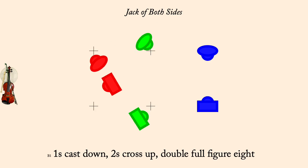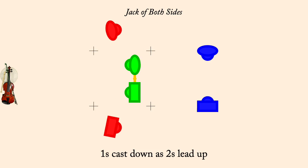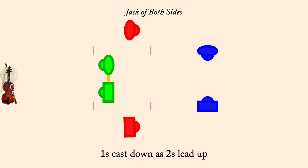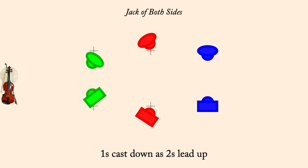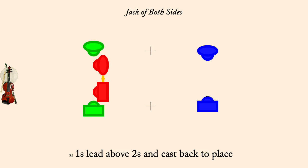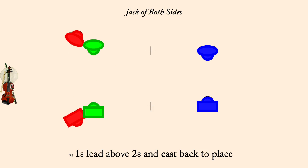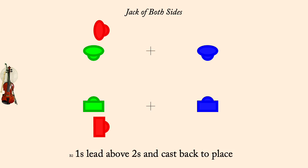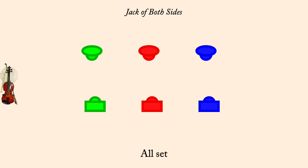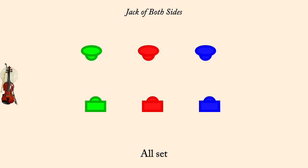Ones cast down as twos lead up. Ones lead above twos and cast back to place. All set. Ones lead down as threes cast up.